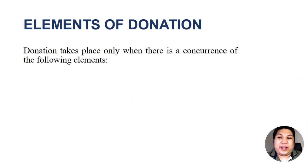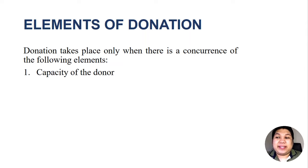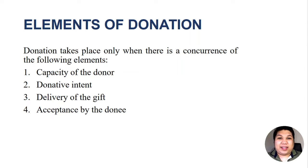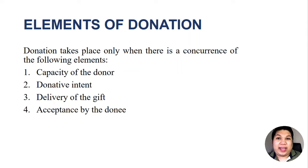Donation takes place only when there is a concurrence of the following four elements: the capacity of the donor, the donative intent, the delivery of the gift, and the acceptance by the donee. These four elements are all required to have a donation. When any element is missing, there is no donation.